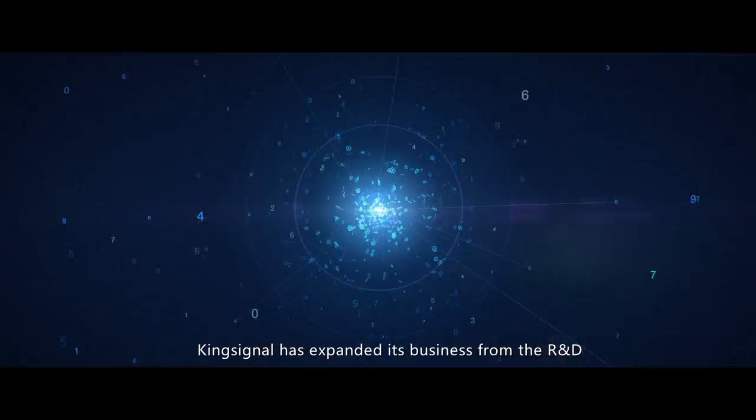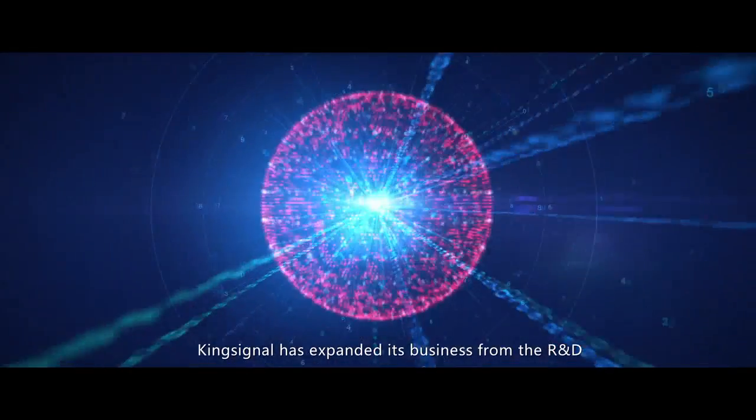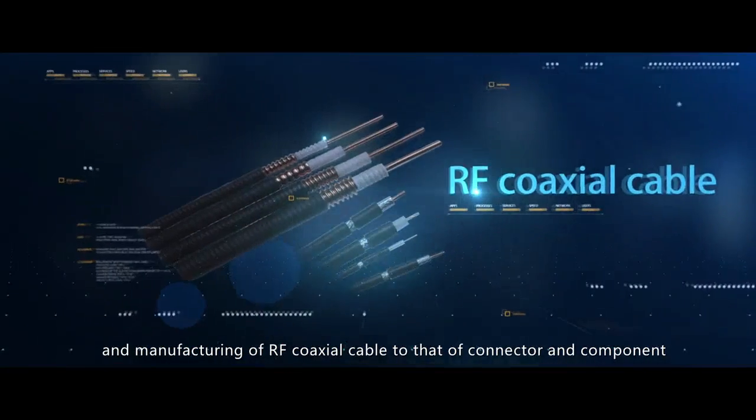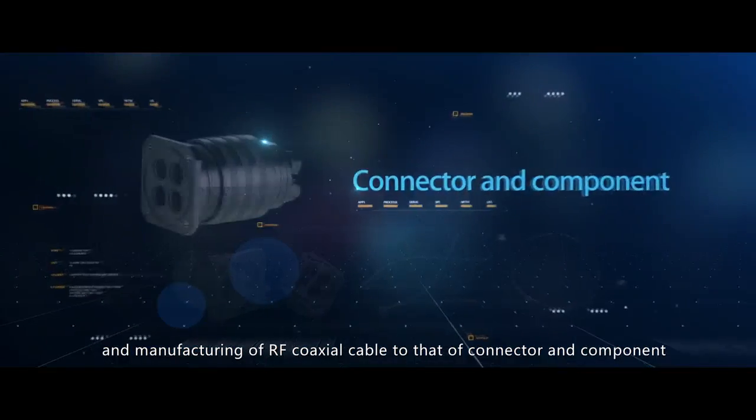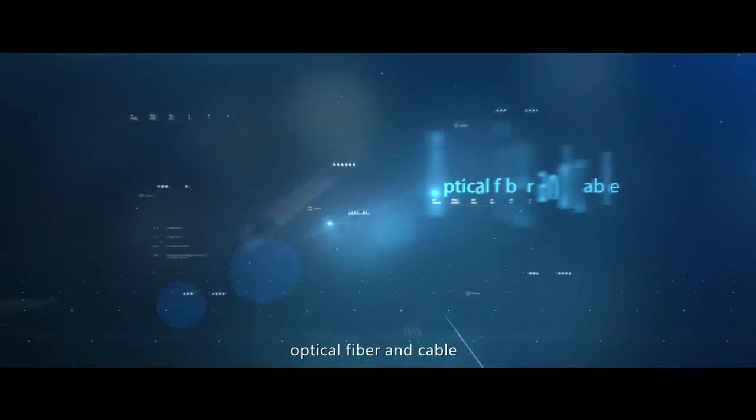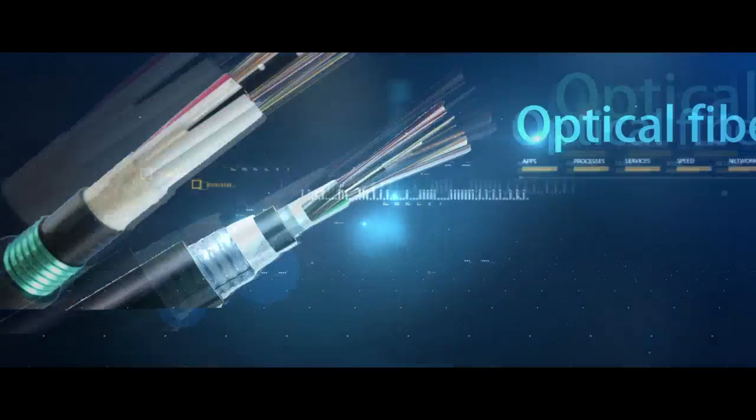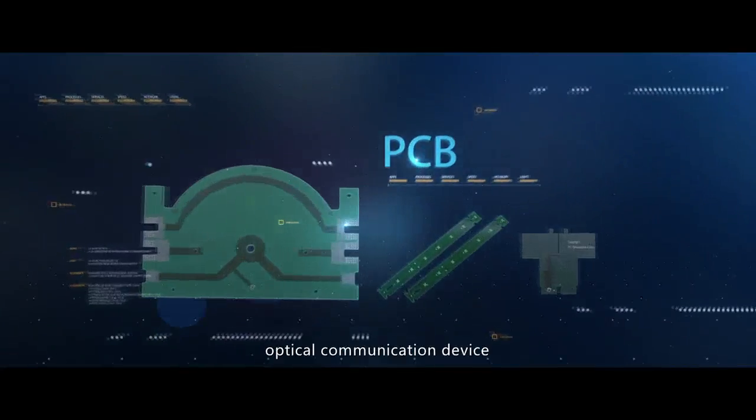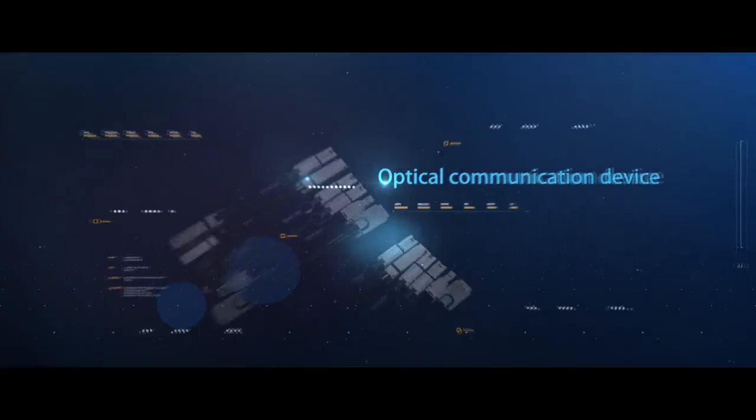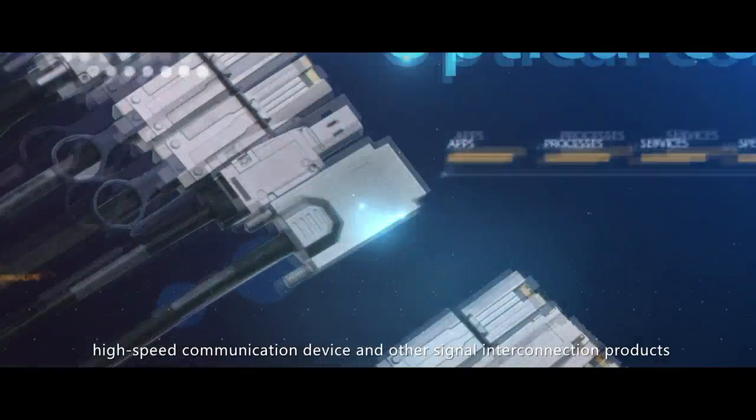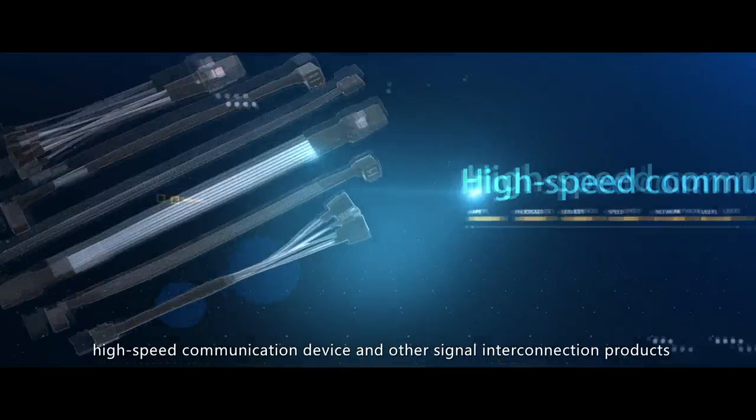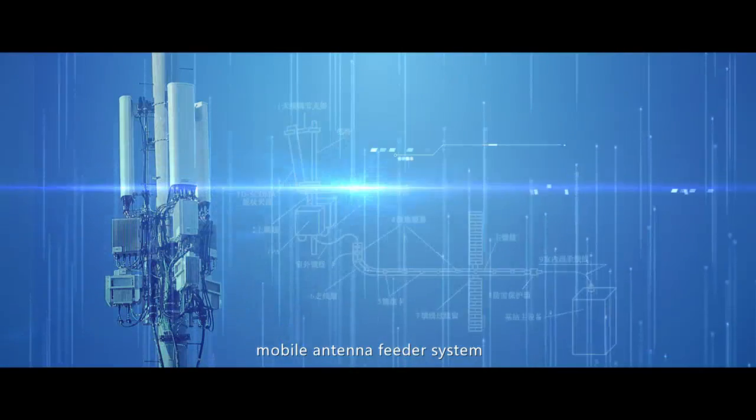King Signal has expanded its business from the R&D and manufacturing of RF coaxial cable to that of connector and component, optical fiber and cable, PCB, optical communication device, high-speed communication device, and other signal interconnection products, mobile antenna feeder system, and indoor coverage system of the civil field.